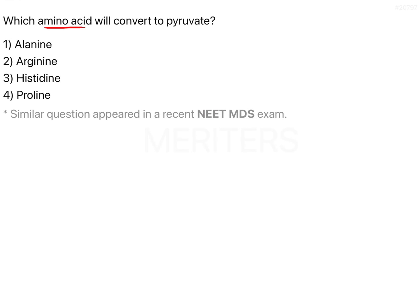Which amino acid will convert to pyruvate? Pyruvate is an end product of the glycolytic pathway which, under aerobic conditions, enters into the TCA cycle and gets completely oxidized. The question is: which amino acid gets converted into pyruvate?